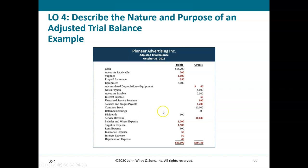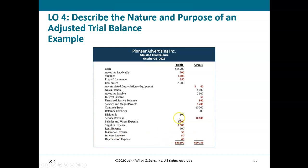Here is an example of the adjusted trial balance — it looks like a regular trial balance but with 'adjusted' in the title. The accounts and balances are listed; items shown in red are those that changed due to adjusting entries, representing the new balances after adjustment. Debits still equal credits. For example, Salaries and Wages Expense and Interest Expense now appear as a result of the accrual entries.